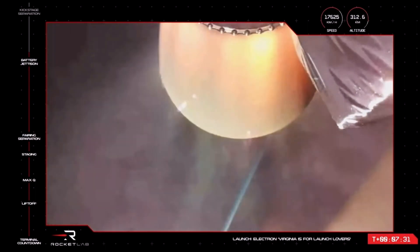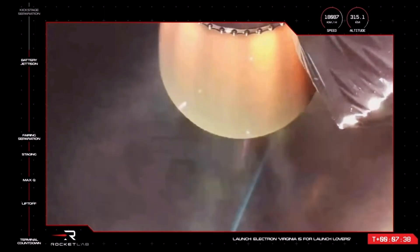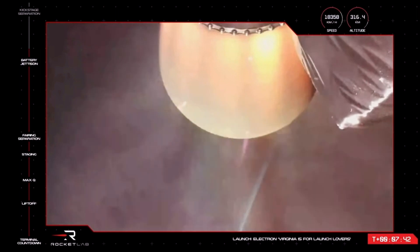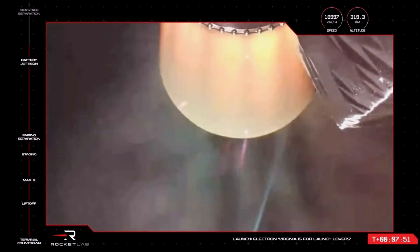Electron will continue with this ascent for the next two and a half minutes until we come up on some of our last actions to complete this mission for Hawkeye 360. They include the shutdown of the second stage engine followed by separation of the kick stage carrying the payloads so that it can begin its first orbit of Earth before our scheduled payload deployment expected at around 57 minutes and 18 seconds into flight.